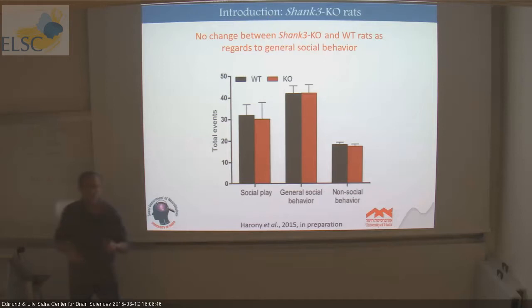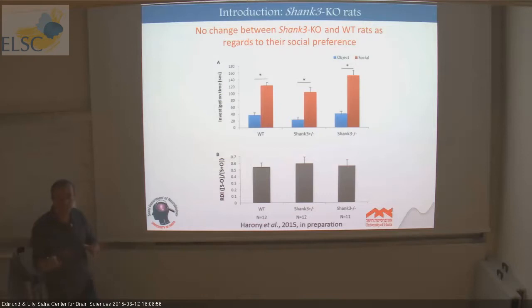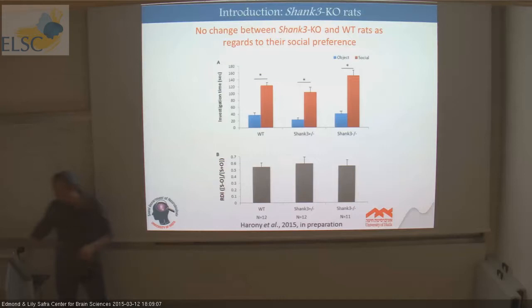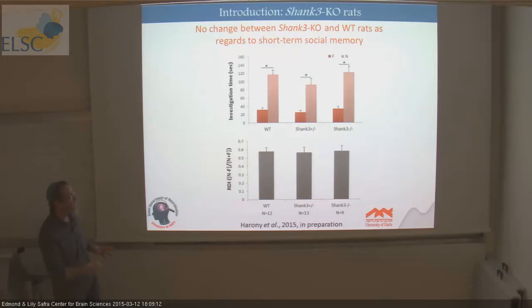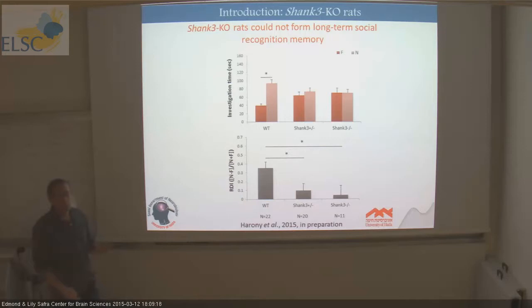We started by analyzing social preference — whether they choose a social stimulus or an object stimulus. All genotypes showed perfect social preference, with no difference between them. They also showed intact short-term social memory with no difference between the three genotypes. But they showed complete abolishment of long-term social recognition memory. Wild types performed normally, but already the heterozygotes do not show any type of long-term social recognition memory.